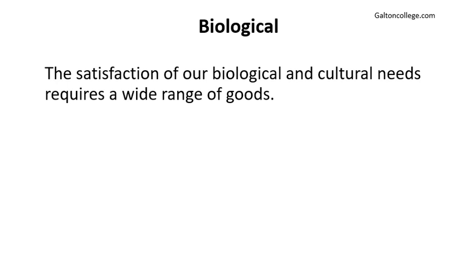The satisfaction of our biological and cultural needs requires a whole range of goods. Because we are complicated people, we don't just want food. And as soon as our food and essentials are met — our security and a place to live — our wants carry on, and we want the next layer. We want not just food; we want nicer food. We want a nicer place to live, and then we need a car — not just a car, we need a bigger car. Then we need a holiday, not just any holiday, we need a big holiday. Our wants just carry on.